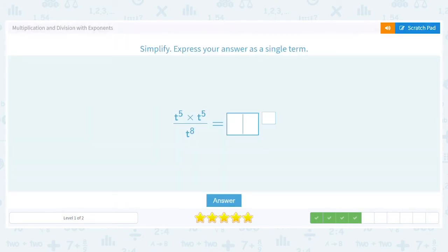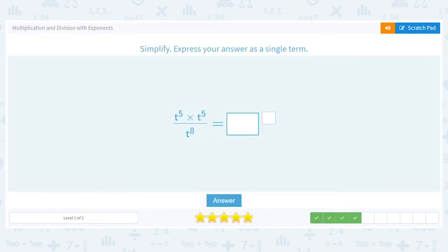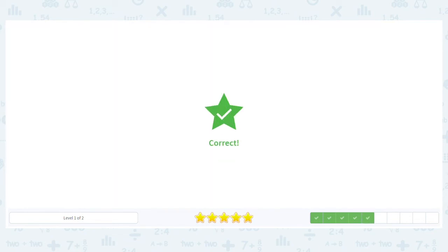Now we have a slightly trickier one because we have stuff on the top and the bottom, numerator and denominator. So we add the exponents in the numerator and we subtract the exponents in the denominator. In this case, we would have five plus five minus eight. So that would give us a total of ten minus eight is two. So we should end up with t to the second power. And it's that simple.